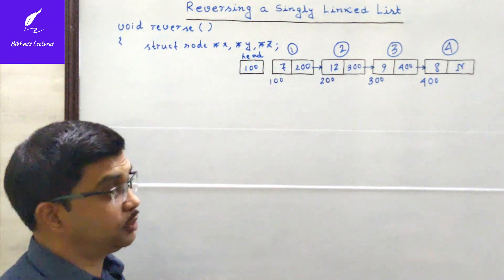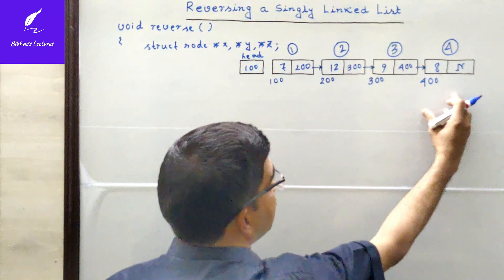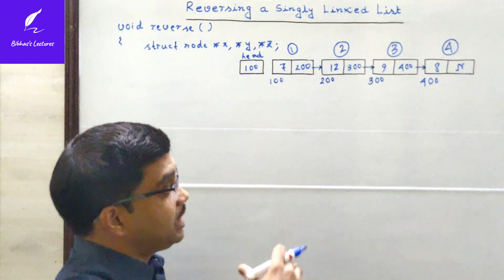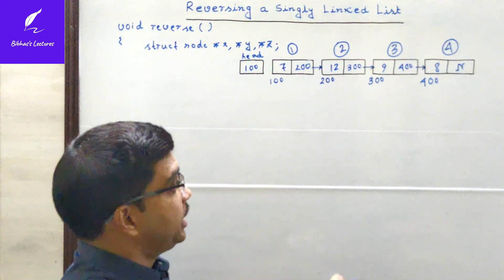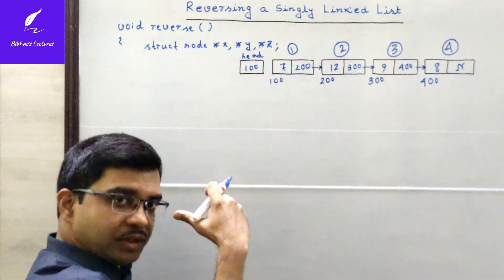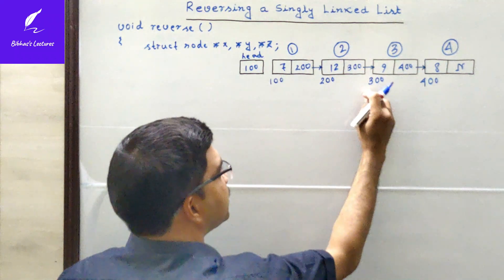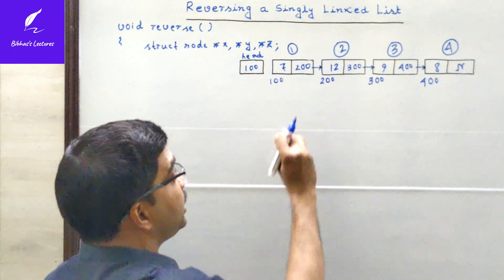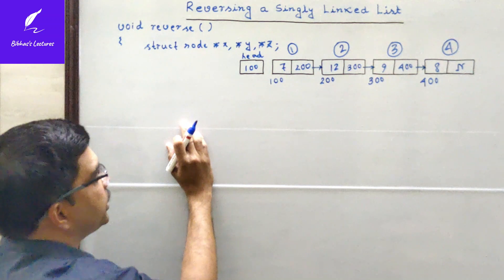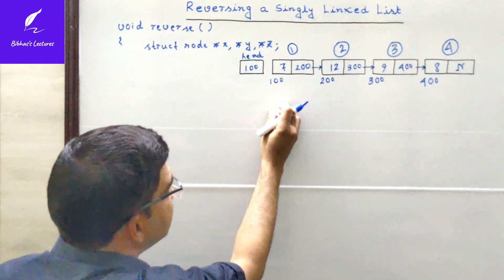Now we have to reverse the list. Reversing means the first node will become the last node and the fourth node will become the first node. The intermediate nodes will also change their next pointers. We are not going to change the data part at all — after reversing, node 100 still holds 7, node 200 holds 12, node 300 holds 9, and node 400 holds 8. Only the next parts will be changed.